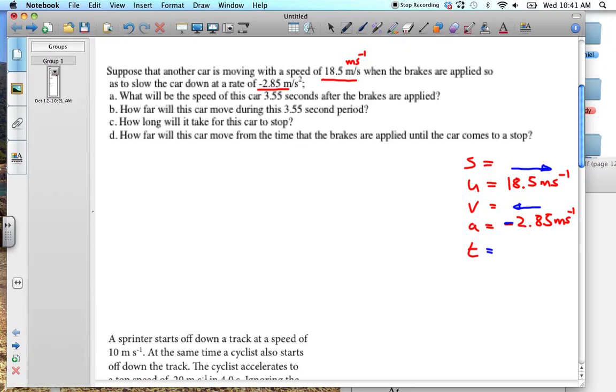Okay, so let's look at A. What will be the speed of this car 3.55 seconds after the brakes are applied? So we're told that it's 3.55 seconds. We're asked, what will the speed be? Velocity is the same thing, traveling in a straight line, although if it goes in the reverse direction, then the velocity would be a negative number.